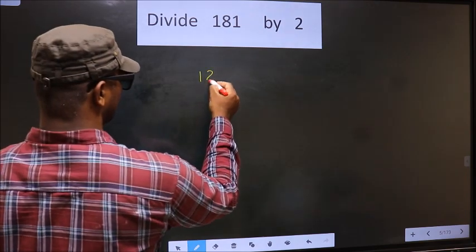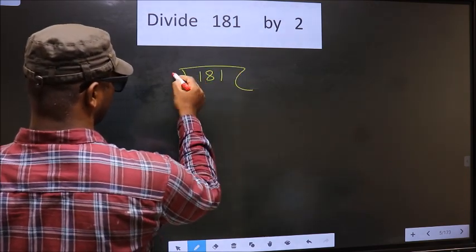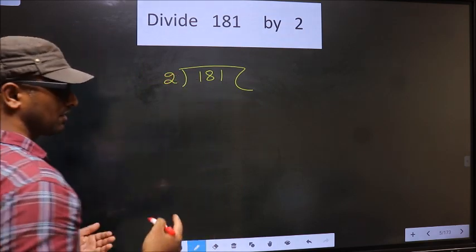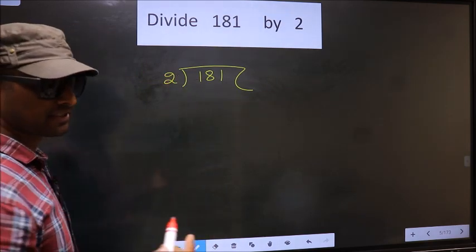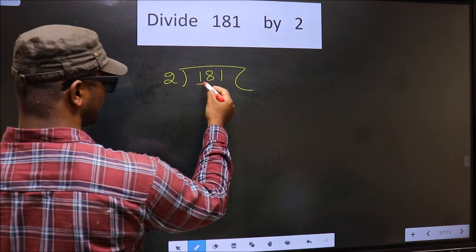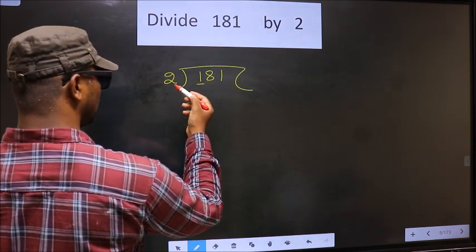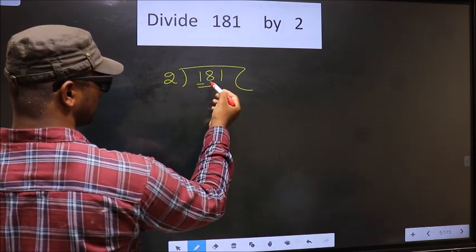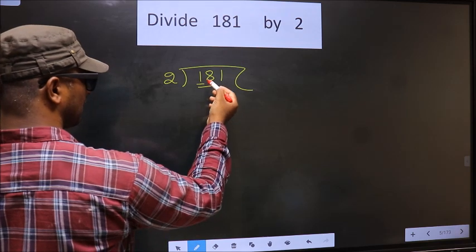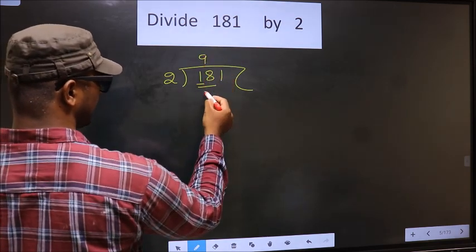That is 181, 2 here. Okay. Next. Now here we have 1 smaller than 2. So we take 2 numbers, that is 18. When do we get 18 in 2 table? 2 nines 18.